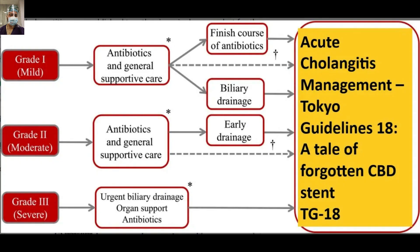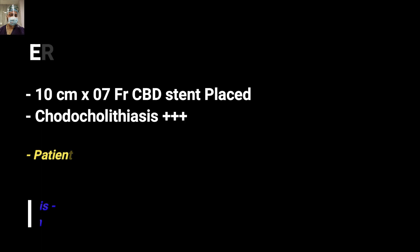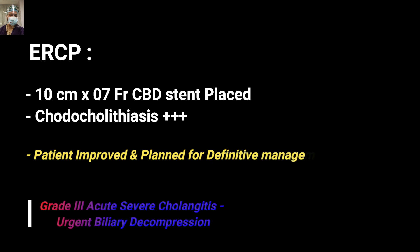The patient was initially managed with IV fluids, antibiotics, and other supportive measures, and improved. This was severe cholangitis Grade 3 as per the Tokyo Guidelines. As per the Tokyo Guidelines 2018, Grade 3 severe cholangitis requires urgent biliary decompression, organ support, and antibiotics. With the help of our gastroenterology colleagues, urgent ERCP was done and a 10 cm, 7 French CBD stent was placed. Extensive choledocholithiasis was documented, and after decompression the patient had marked improvement.